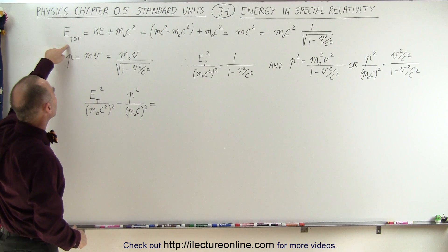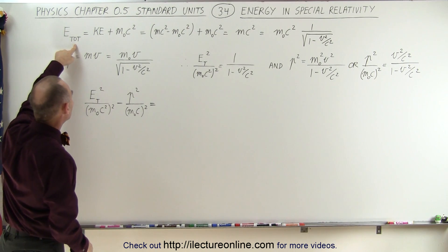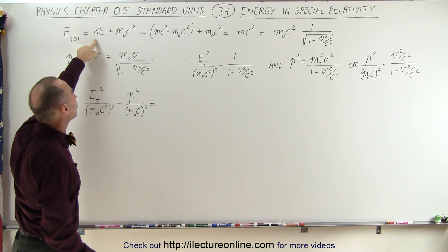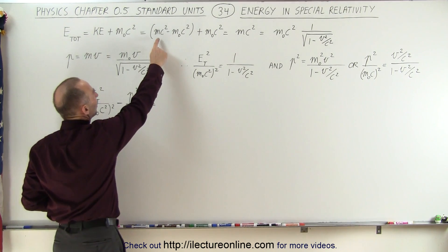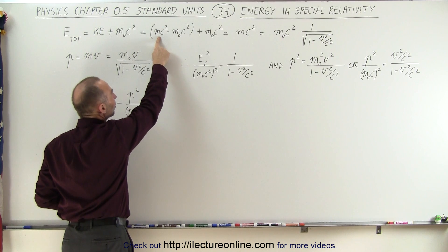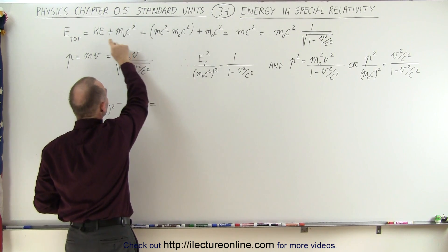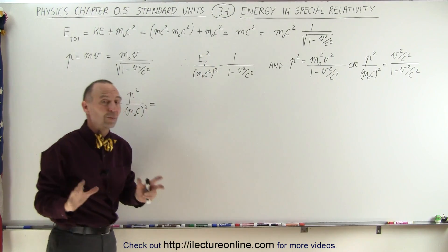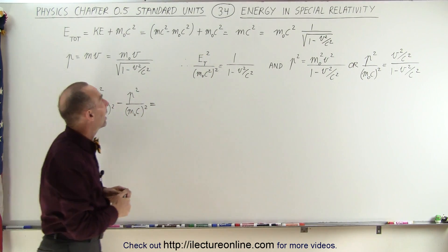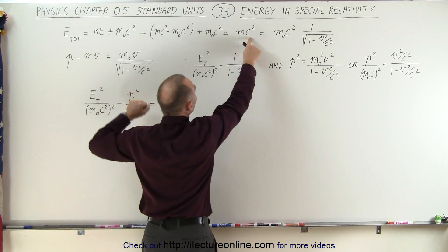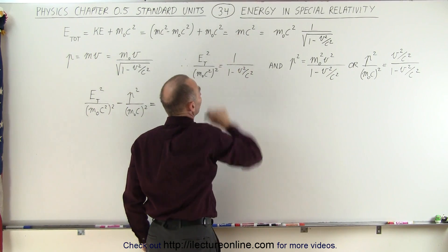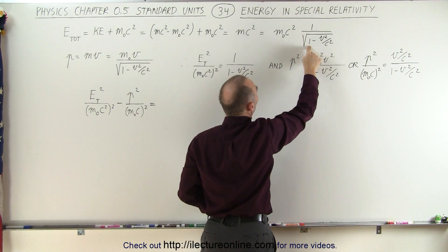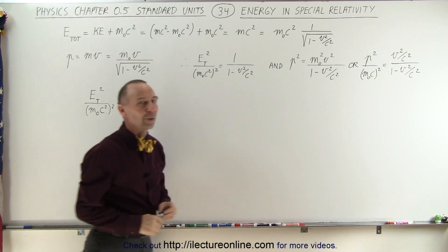We can write the energy in terms of the total energy being equal to the kinetic energy plus the rest mass energy. The kinetic energy is equal to the difference of the relativistic energy, mc squared, minus the rest mass energy. The rest mass energy cancels, and we're left with the total energy equals mc squared, where m is the relativistic mass, written as the rest mass times 1 over the square root of 1 minus v squared over c squared.